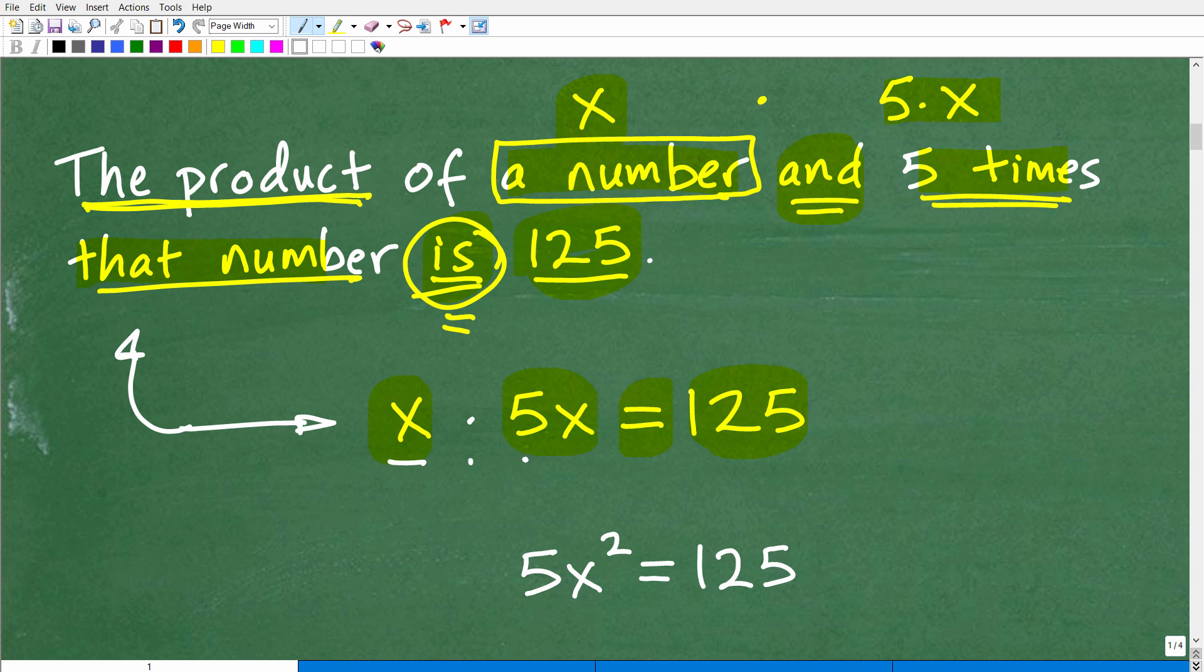try to translate this way going back into the verbal phrase. So I'm like, okay, I have a number times five times that number is equal to 125. And that's effectively what that is there. Okay.